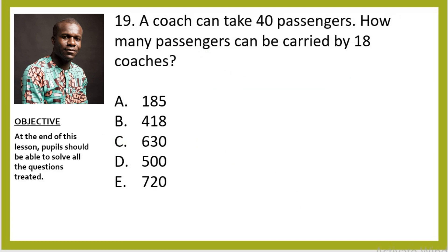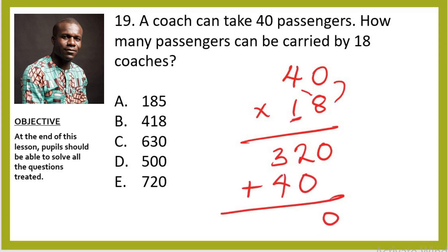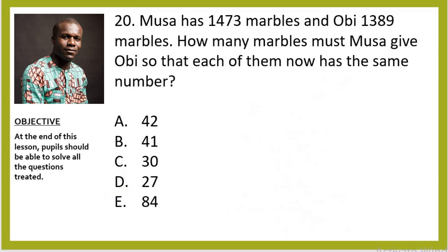Question 19: If a coach can take 40 passengers, how many passengers can be carried by 18 coaches? This is simple multiplication: 40 × 18. 8×0=0, 8×4=32; then 1×0=0, 1×4=4. Sum the partial products: 320 + 400 = 720.